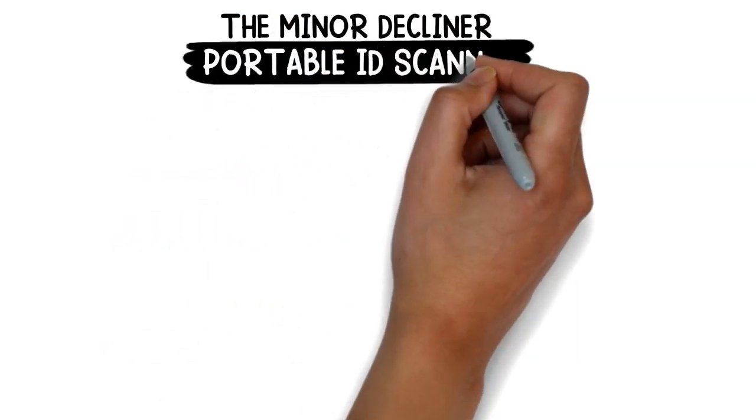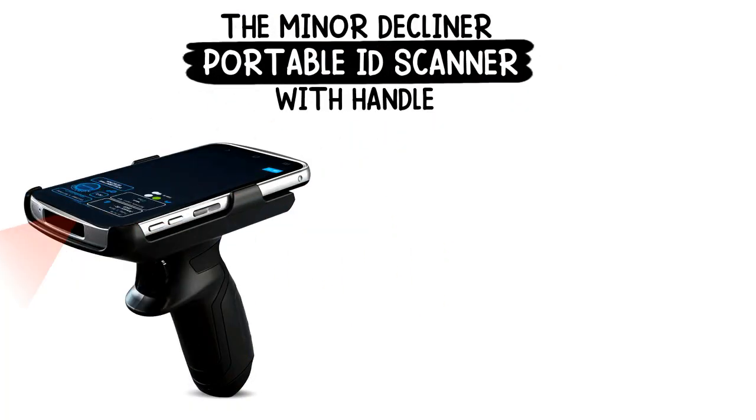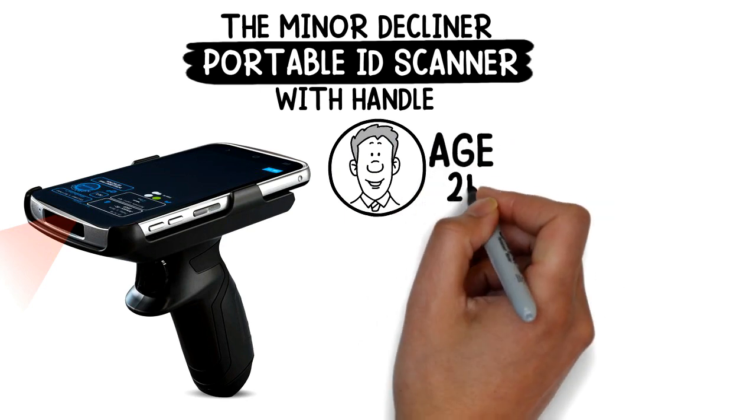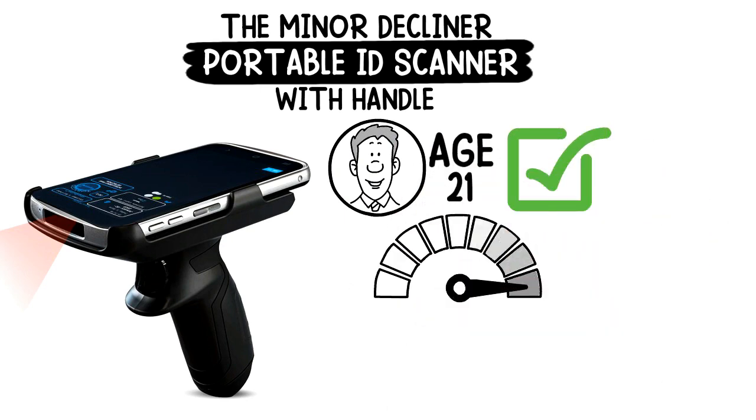The Minor Decliner Portable ID Scanner with Handle is a great mobile solution for those that need portable age verification with the ability to scan fast.